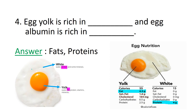Question number 4: Egg yolk is rich in fat and egg albumin is rich in protein. To answer this question, you need to look at the parts of the egg. The white portion of the egg is known as egg white whereas the yellow portion is commonly known as yolk. If you see carefully in the diagram, it is shown under the egg nutrient section that the yolk is highly rich in fat whereas the egg white or egg albumin is rich in proteins. Hence, egg yolk is rich in fats whereas egg albumin is rich in proteins.